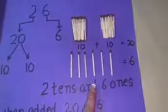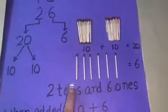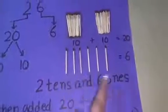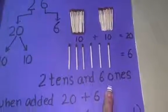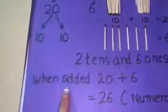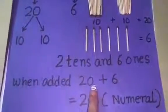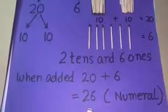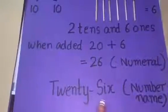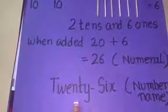And I have 6 loose matchsticks which cannot be grouped into tens. So, they remain loose as 6 ones. Therefore, 2 tens and 6 ones, when added together, gives me the numeral 26. And it is written in number name as shown, twenty-six.